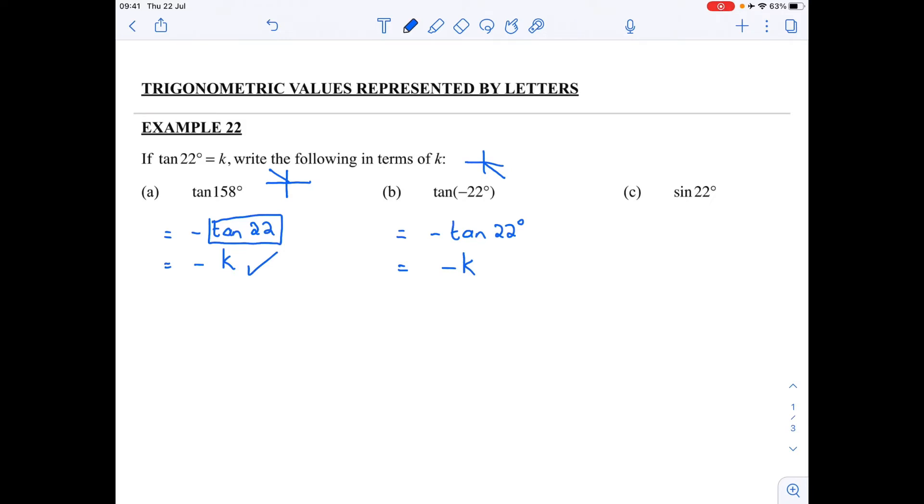Now we look at sin of 22. So now the angle is 22 and I want tan of 22. And that is going to be a little bit of a problem. But what I'm going to do is I'm going to use the knowledge that I have. And the knowledge that I have is that the tan of 22 degrees is equal to k.